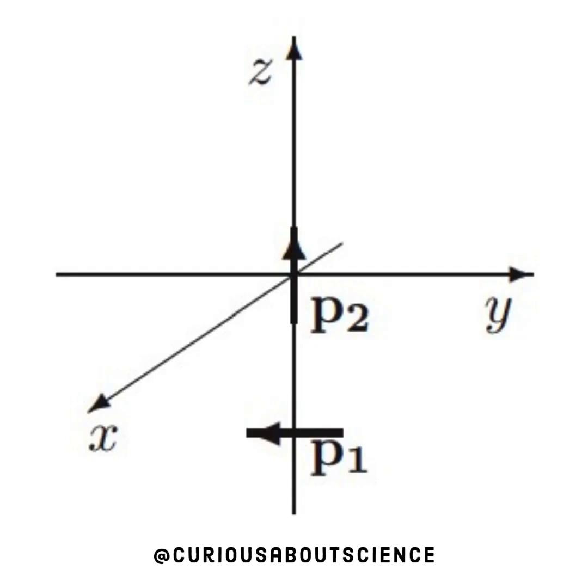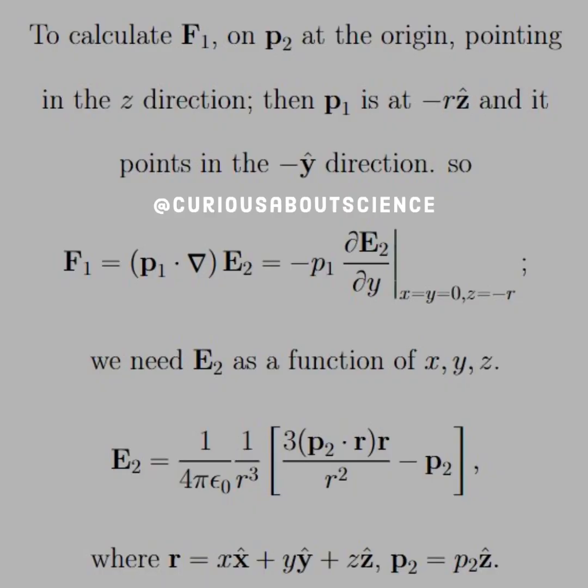Now, if we look at the second scenario for part A, we go back to our diagram and we rotate the scenario so where P2 is now at the origin and P1 is pointed in the negative y direction. And then P2 would therefore be pointing in the positive z direction. So to calculate F1, put P2 at the origin pointed in the positive z direction. Then P1 is at negative r z hat and it points in the negative y direction.